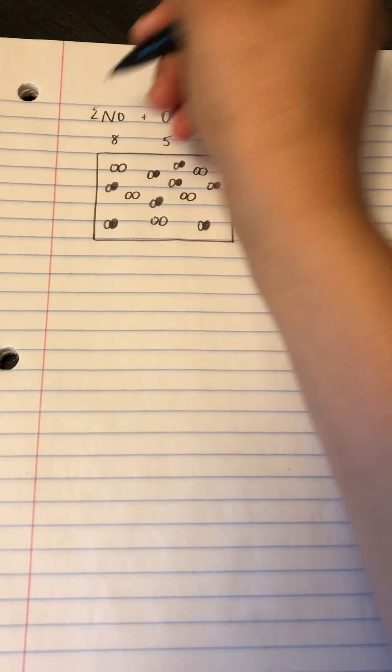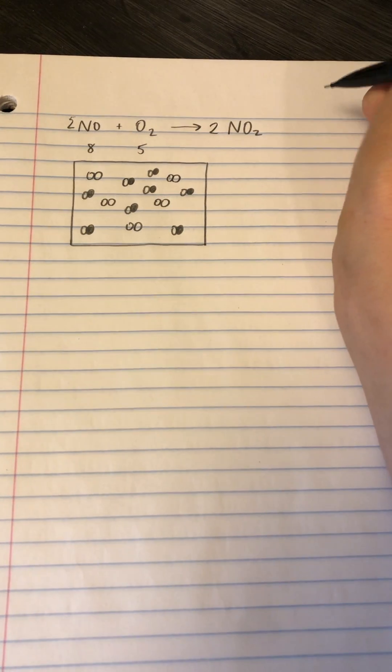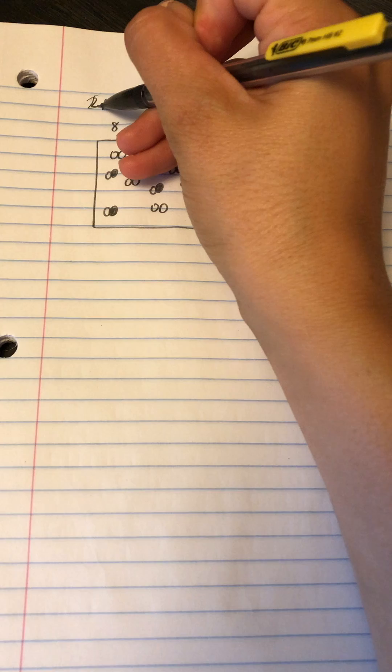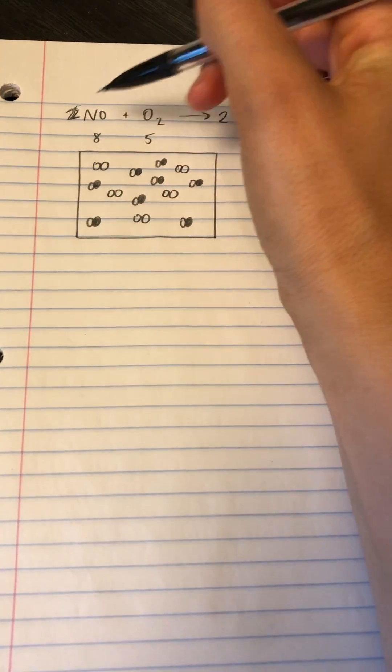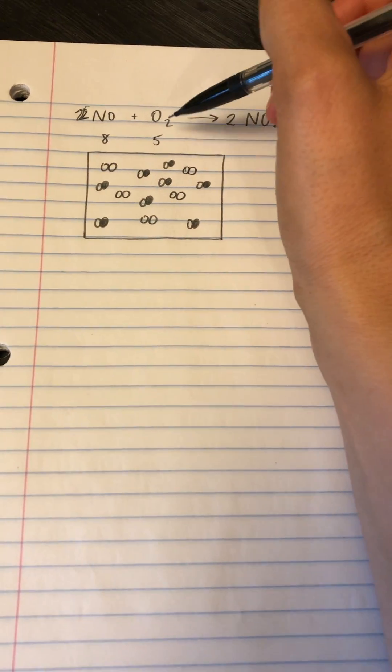And so to balance the equation, you need two NOs and two NO2s. So now what this is saying, right, this is a two, is that for every two NOs, you need one O2.